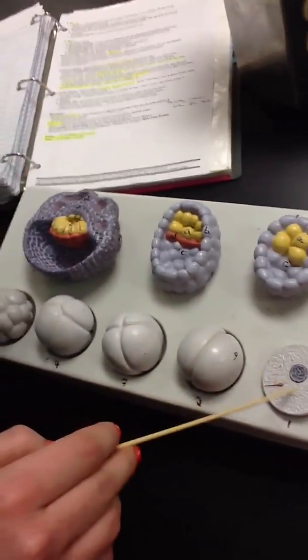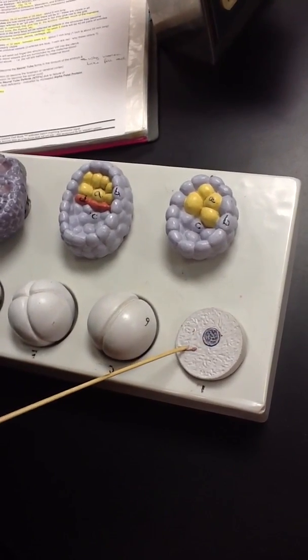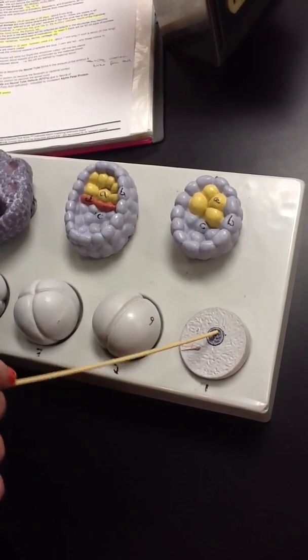All right, this is fetal development. We have the zygote, the fertilized oocyte. Note that the sperm pronucleus has not been fused with the oocyte, or the female pronucleus.